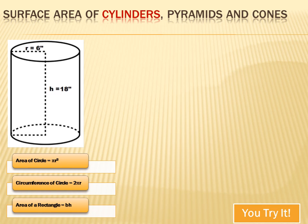Why don't you try this one? Here's a cylinder, and they're giving me some information — the radius and the height. We're also given the formula for the area of a circle, for the circumference of the circle, and for the area of the rectangle. Can you figure out what the surface area of that cylinder is? Hit your pause button, do the math, and then hit your forward key to move on to my answer.